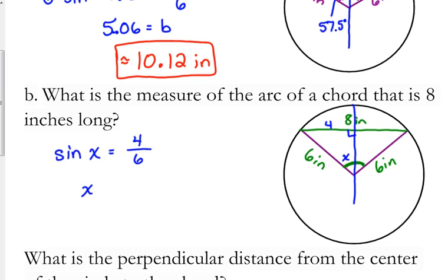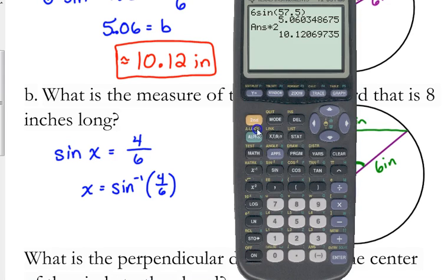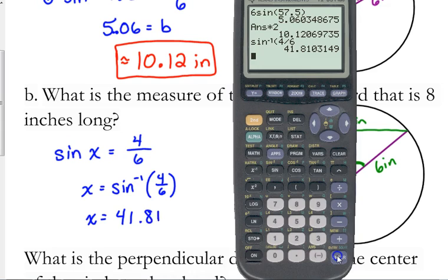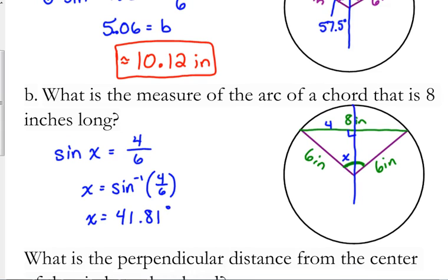How do we solve for angles? The inverse. Inverse sine of 4 over 6. So, our angle is 41.81. Is that our final answer? No. That's just the angle within the triangle. We want to know that entire central angle.